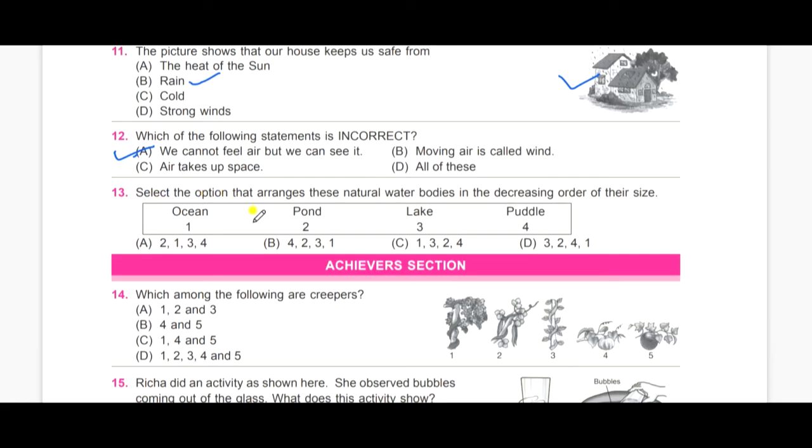Thirteenth one. Select the option that arranges these natural water bodies in the decreasing order of their size. A, two, one, three. B, four, two, three, one, C, one, three, two, four, and D, three, two, one. Now, we will look at the table. Ocean, one, pond, two, lake, three, and puddle, four. You need to arrange in according to the size in the decreasing order. So, the answer is C. One, three, two, four. Ocean comes first, lakes come second, ponds come third, and puddles comes the fourth.